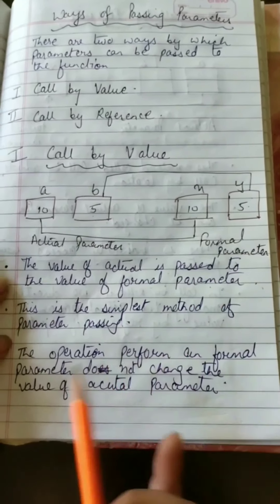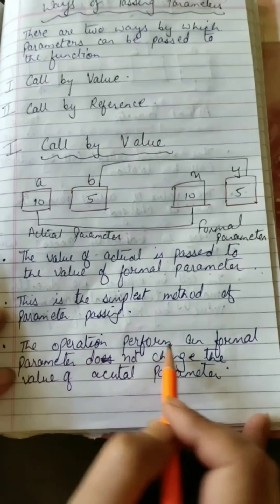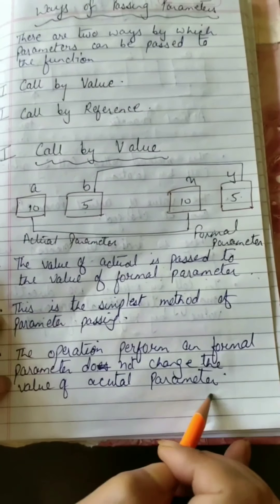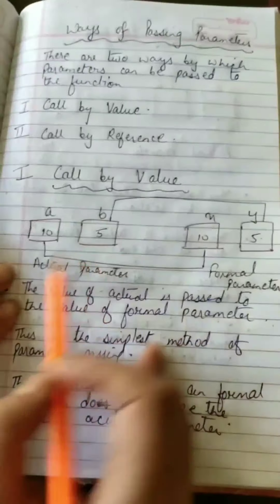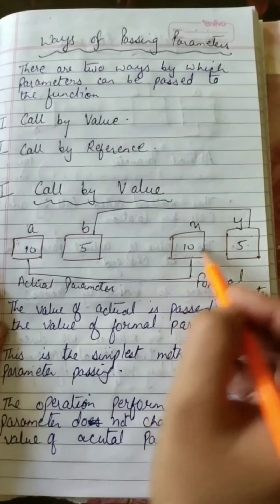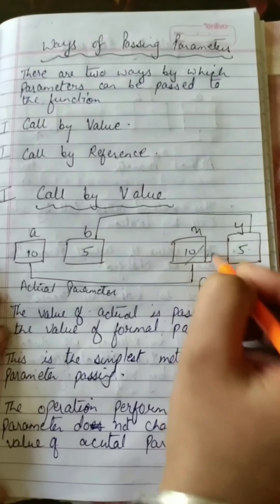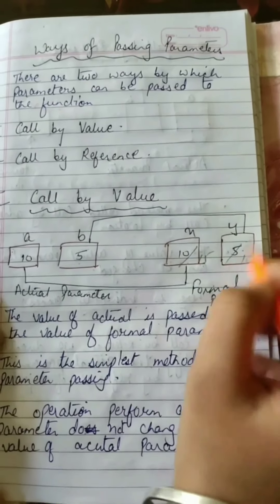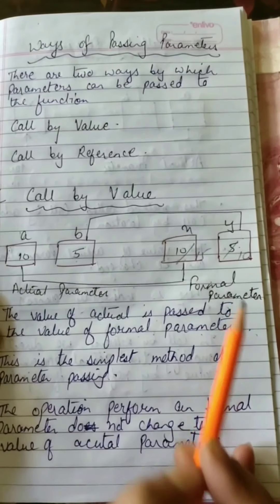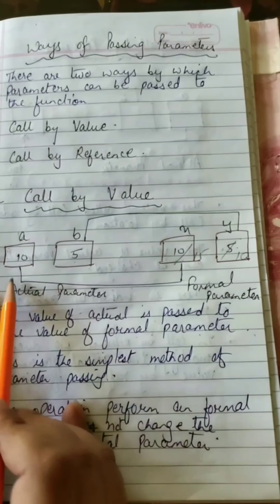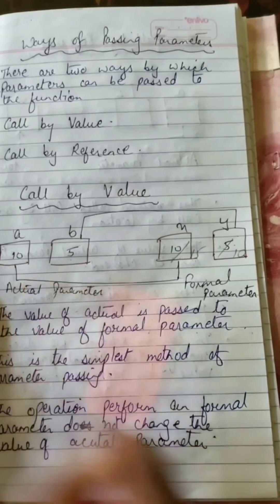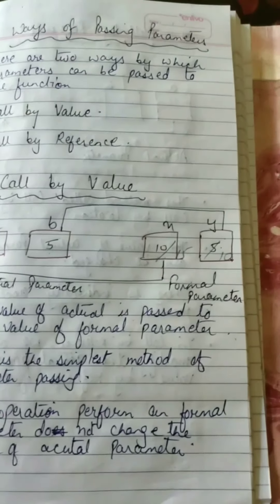In call by value, any operation performed on the formal parameter does not change the value of the actual parameter. If we want to modify the value from 10 to 15 or 5 to 10 in the formal parameter, the value of the actual parameter will not change. The working of the formal parameter does not affect the actual parameter; the same values remain on both sides.